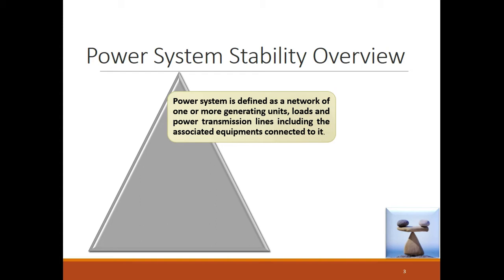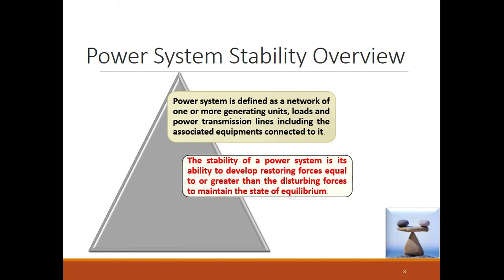The generation, transmission, and distribution networks with associated equipments along with the load is what we call the overall power system. The definition of stability: the stability of a power system is its ability to develop restoring forces equal to or greater than disturbing forces to maintain the state of equilibrium.